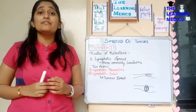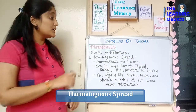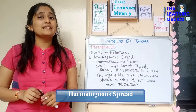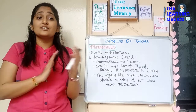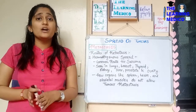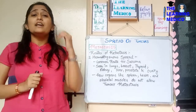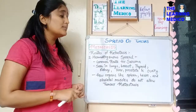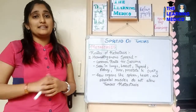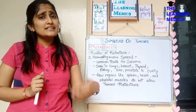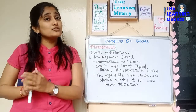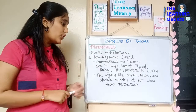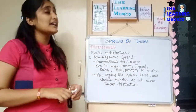Next is hematogenous spread, which is most commonly seen in sarcoma. It does not primarily involve the lymph nodes. The organs mainly affected by hematogenous spread include lungs, breast, thyroid, kidney, liver, prostate, and ovaries. Some organs like the heart and skeletal muscles are resistant and do not allow hematogenous tumor metastasis.